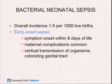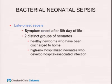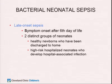Bacterial neonatal sepsis has an overall incidence of one to five per 1,000 live births. Early onset is defined as symptom onset in the first week of life; maternal complications are usually present, and it occurs from vertical transmission of organisms colonizing the genital tract. Late onset sepsis is defined as symptom onset after the first week of life. These split into two groups: the healthy newborn discharged home who returns with fever, versus high-risk hospitalized neonates with hospital-associated infections — and the causative organisms differ between groups.